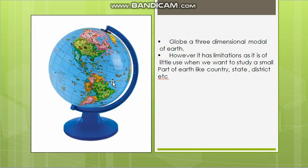First, let us look at the globe. The globe is a 3-dimensional model of the Earth. You have seen the globe in 3 dimensions. There are a lot of relief features like mountains, valleys, etc.